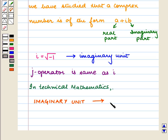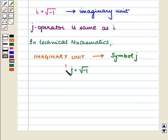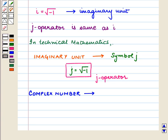In technical mathematics, the imaginary unit is represented by the symbol J, where J is equal to the square root of minus 1. So, a complex number is of the form A plus JB, where A is the real part and B is the imaginary part.